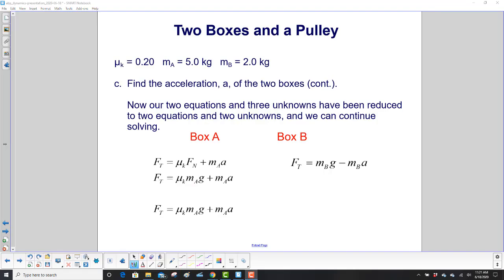Finally, our two equations and three unknowns have been reduced to two equations and two unknowns, and we can continue solving the problem. So from the previous slide, we had box A was mu k times a normal plus m a times acceleration. And what was the normal equal to? m sub a g. So it's substituted in for the normal force. So we have our equation right here. Just repeated it here at the bottom to separate it. And here's our other equation for box B.